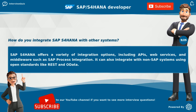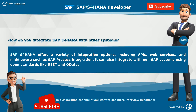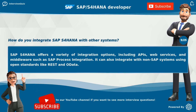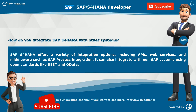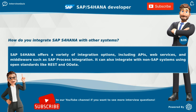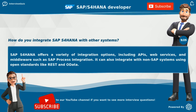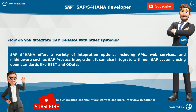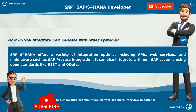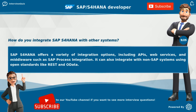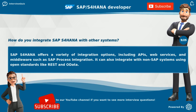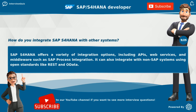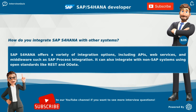How do you integrate SAP S4 HANA with other systems? SAP S4 HANA offers a variety of integration options, including APIs, web services, and middleware such as SAP Process Integration. It can also integrate with non-SAP systems using open standards like REST and OData.